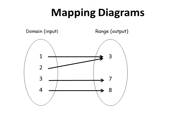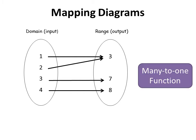Another kind of function is many-to-one, meaning you have two or more elements from the domain matching to one element in the range. They use 'many' to mean more than one. As long as you have one case of more than one domain elements mapping to one range element, we call it a many-to-one function.